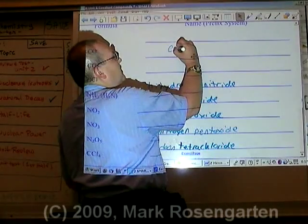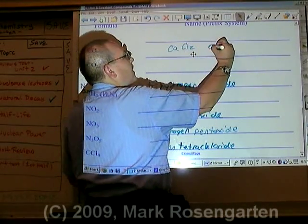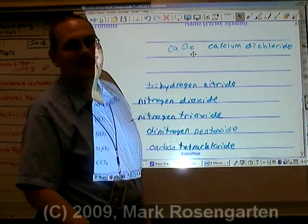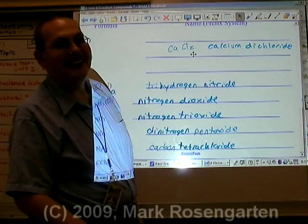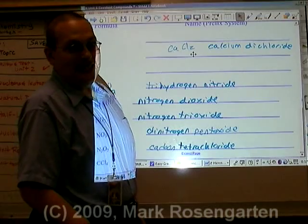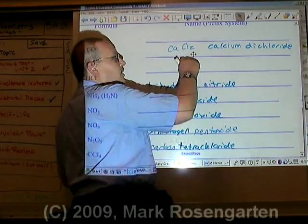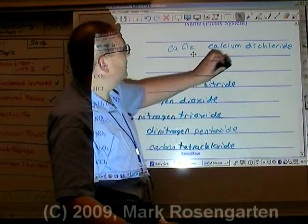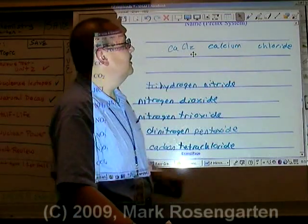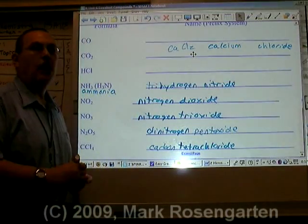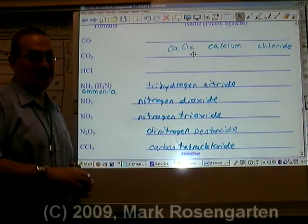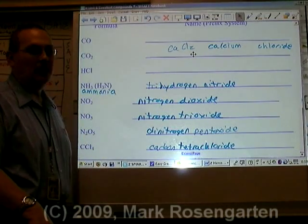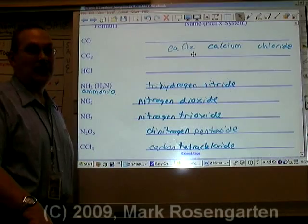You might be tempted to call CaCl2 calcium dichloride — don't do it. Why? Because this is just calcium chloride. When you do ionic compounds, you do not use the prefix system, only the stock system. If you were to write calcium dichloride for this, it's just not going to be a pretty sight.